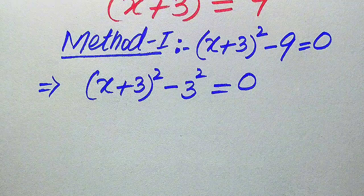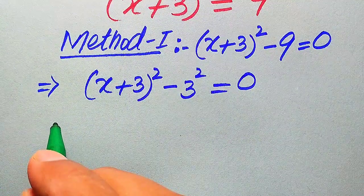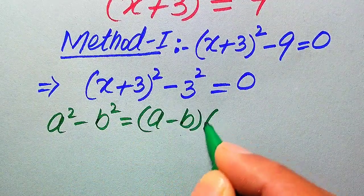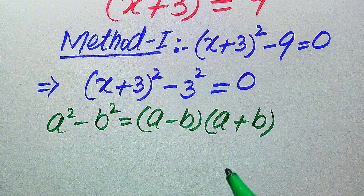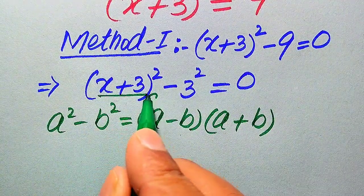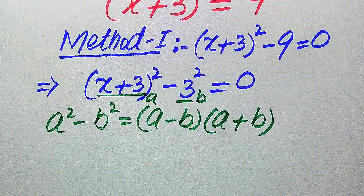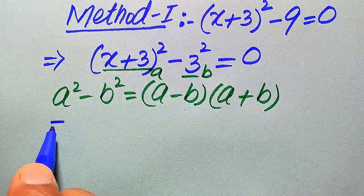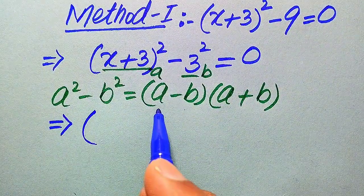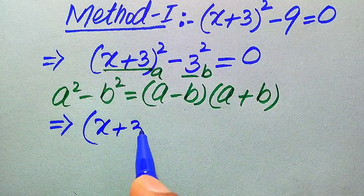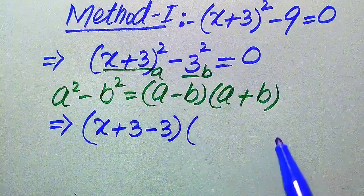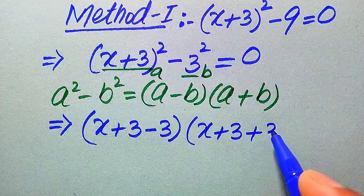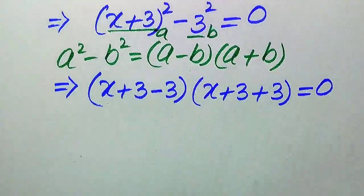In the next step we need to use the algebraic formula: a² − b² = (a − b)(a + b). Here the base of the first term is our a and the base of the second term is our b. After substituting these values, it will be written as (x + 3 − 3)(x + 3 + 3) = 0.